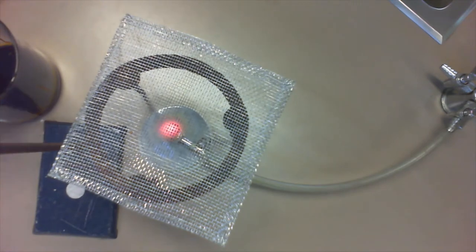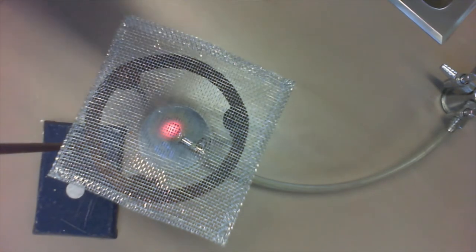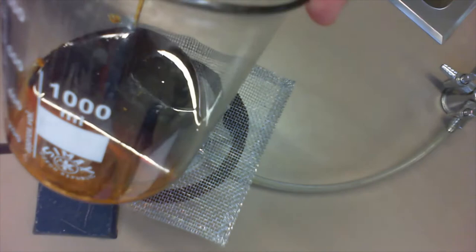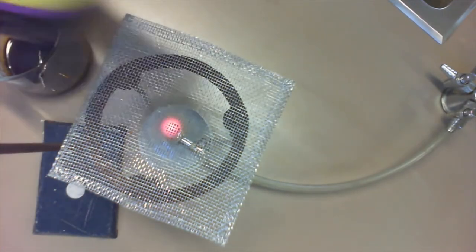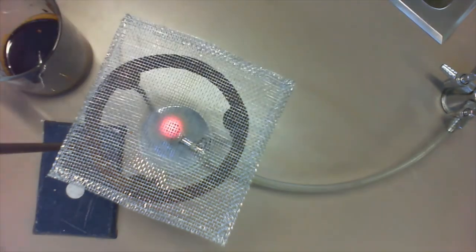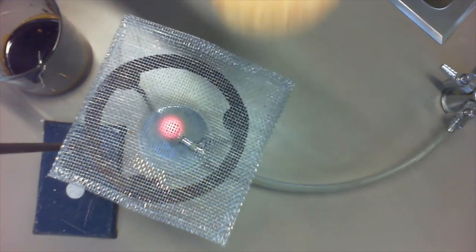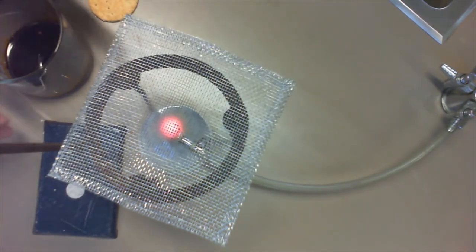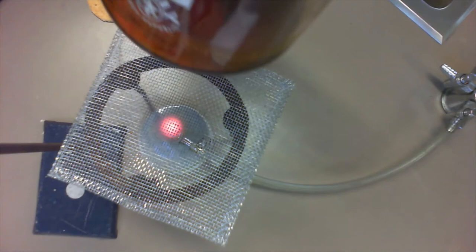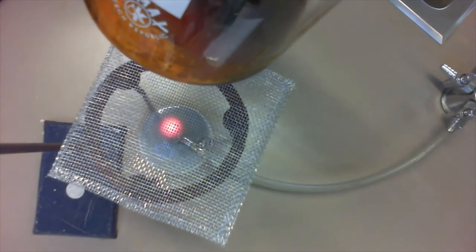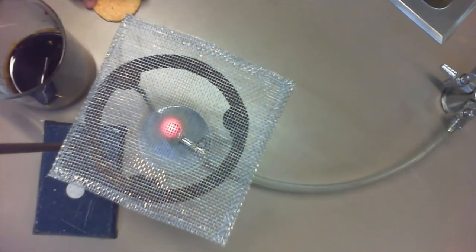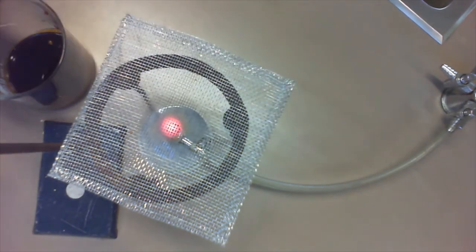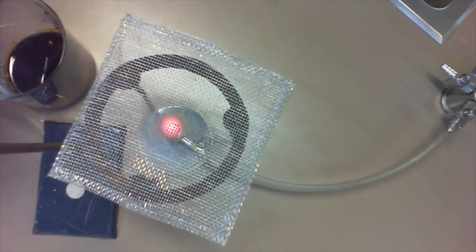For this experiment we need a beaker filled up with golden syrup. This is good old Australian Bundaberg golden syrup. We've got some wheat biscuits, fairly cheap wheat biscuits. The golden syrup represents the mantle because it's a thick pasty material, and our wheat biscuit represents the continental and oceanic crust.